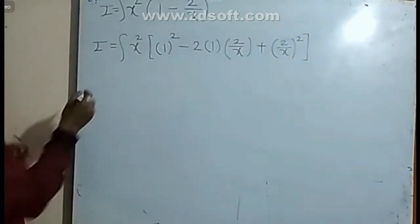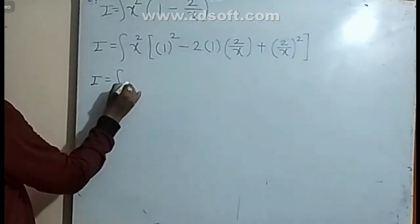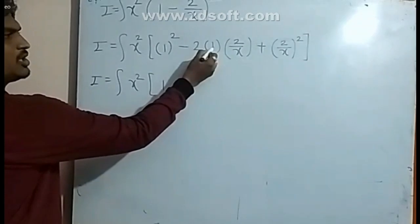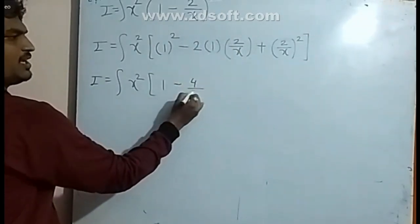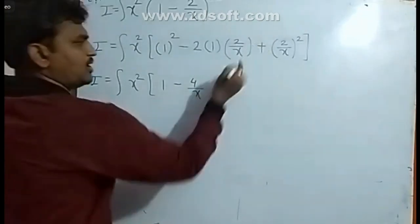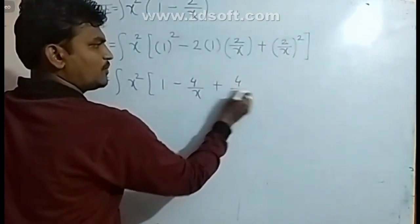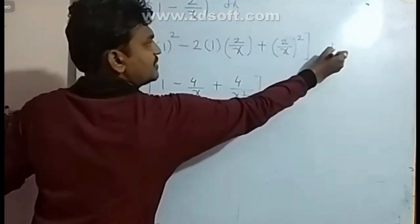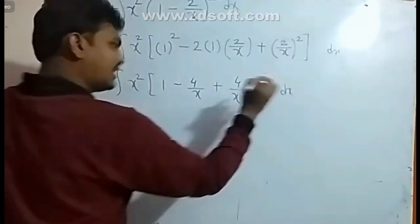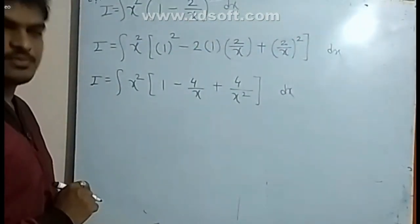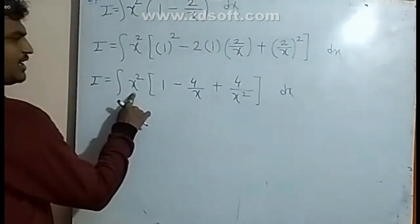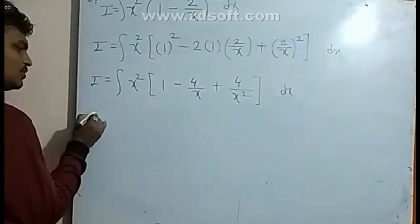2 by x star whole square. So: 1 minus 2 by x whole square gives 1 minus 2 times 1 by x plus x star square. x squared by x squared equals 1. So x2 i is equal to integration of x squared divided by x squared equal to 1.